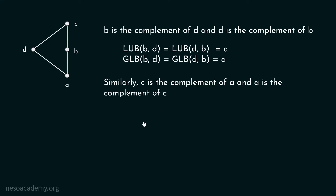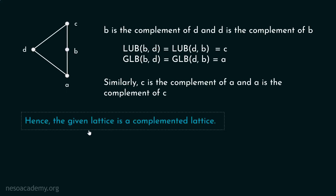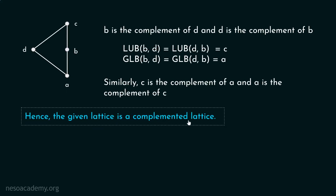Hence, it is clear that every element has a complement. Therefore, the given lattice is a complemented lattice. Every element has a complement — there is no such element which does not have a complement. Hence it is a complemented lattice.